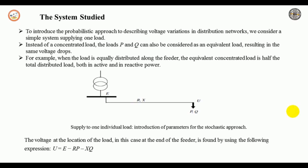The voltage at the location of the load, at the end of the feeder, is found by the expression U = E - R·P - X·Q, where E, P, and Q are random variables described by probability density functions or probability distribution functions. Furthermore, any correlation between E, P, and Q should be considered. Resistance R and reactance X of the feeder are considered as deterministic parameters — their variation (e.g., resistance change with temperature) has less impact than the approximation made by the above equation.